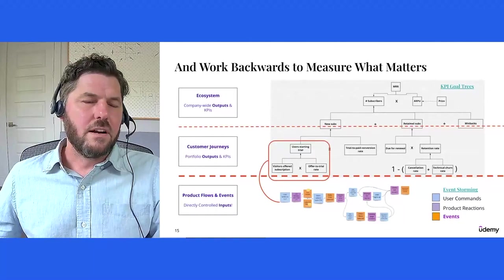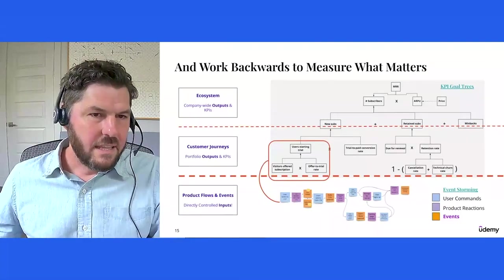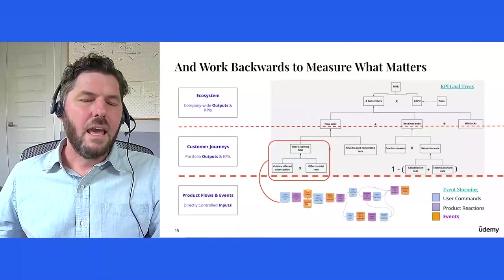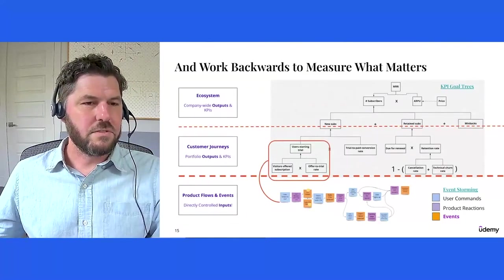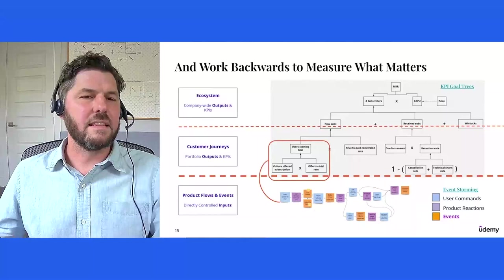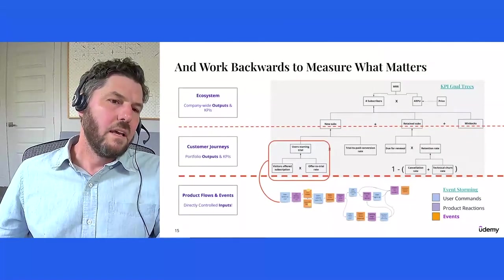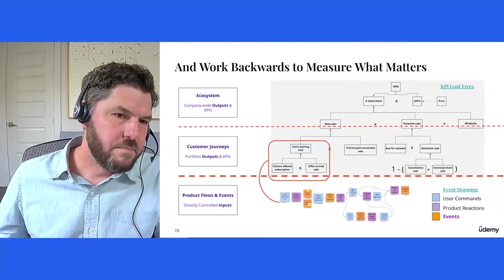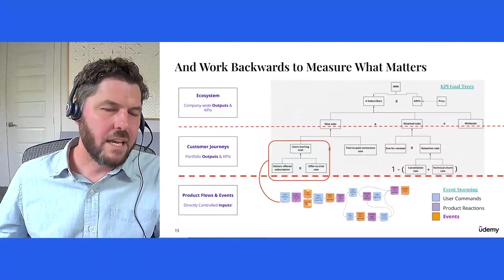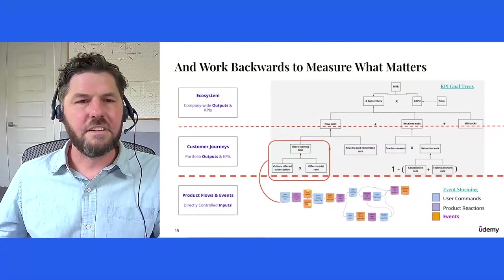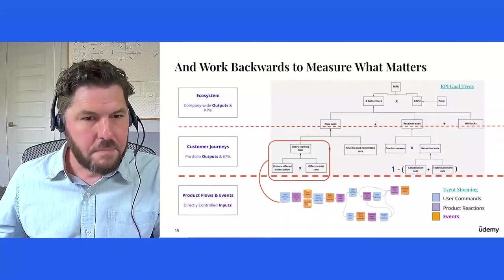KPI goal trees or driver trees are nothing more than a causal tree where the root is a key lagging business outcome. In this case, monthly recurring revenue for a subscription product. And you can imagine how outputs in earlier phases of the customer journey for learners can be measured, and how these are prerequisites to later outputs happening. So for instance, in that left branch of the tree, visitors need to be offered a subscription. And then there must be an offer to trial rate conversion, at which point they start the trial. And then there must be a trial to paid conversion rate, at which point we have new subscribers, and so on. This ladders up the tree. Each of the nodes in this tree are effectively outputs that we don't directly control, but we influence them with inputs that are our product flows.